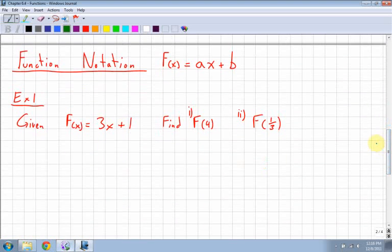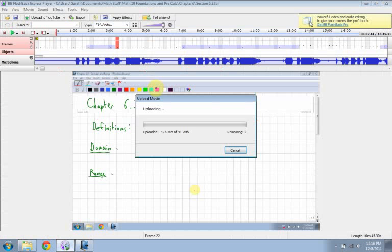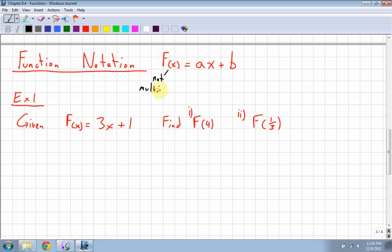Second half of this lesson. Function notation. So, here we have function notation. F of x equals ax plus b. This is not multiplication. Not multiplied.